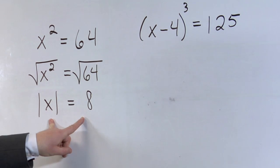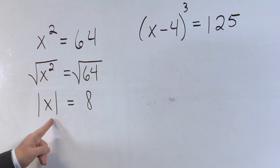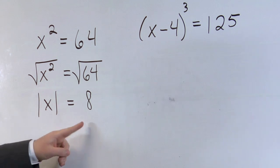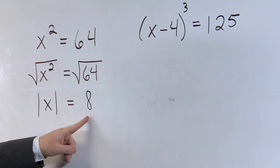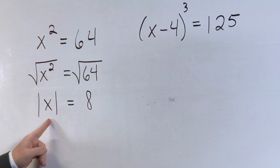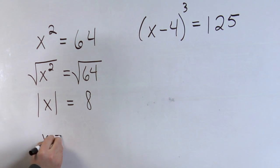To solve an absolute value equation, we need to think of two different numbers that go in for x that results in a positive 8. Well the two values would be x equals 8, or negative 8.